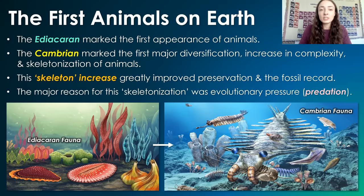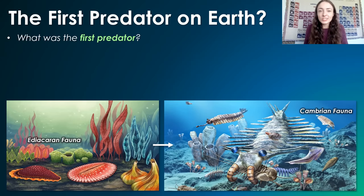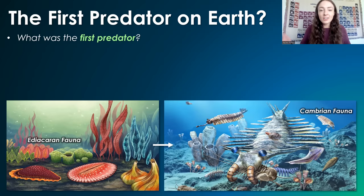The major reason for the skeletonization was likely evolutionary pressure — in other words, predation. So what was doing the predation at the time? What was the very first predator that caused these very first defense-type mechanisms to evolve in early life?